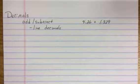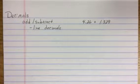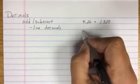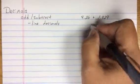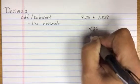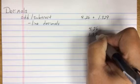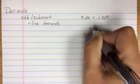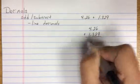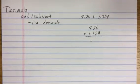4.26 plus 1.329. I do not line up off of the right, I line up the decimals. So when I rewrite this problem, these decimals are like a supporting wall of a house. They do not move. You keep them all nice in a row.